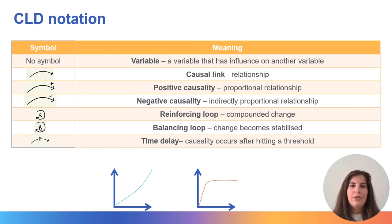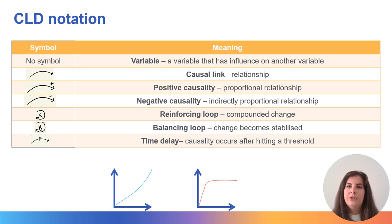This slide goes through the causal loop diagram notation, which is common practice within the field. When there is just text, this is your variable in question. An arrow to or from it indicates a causal link to another variable. When that arrow has a positive sign next to it, that indicates a proportional relationship — so as variable X increases, variable Y also increases. When there is a negative sign next to the causal arrow, this indicates an inversely proportional relationship — so as variable X increases, variable Y decreases.